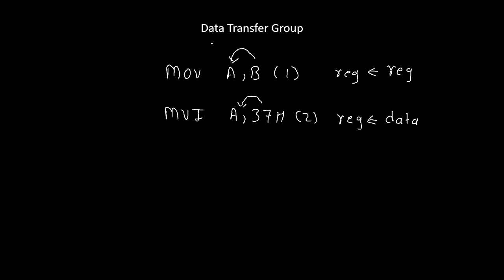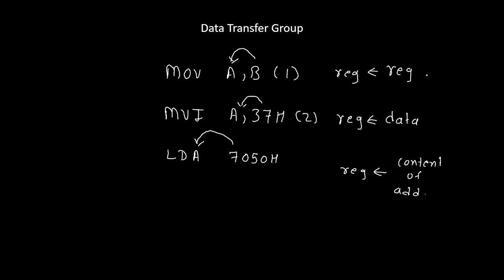One more instruction belonging to the data transfer group is LDA 7050H. LDA stands for load accumulator — we will load the accumulator with the content of address 7050H. Whichever value is stored at address 7050H will get loaded inside the accumulator. So we are transferring the content of an address to a register.